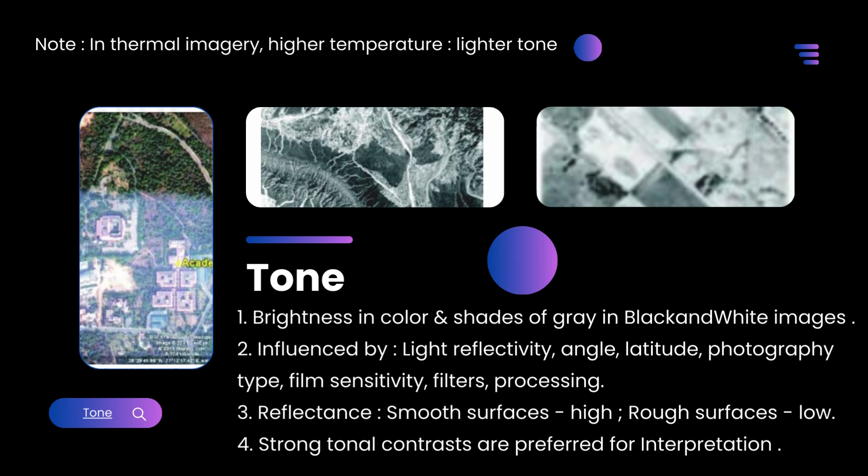Now let's explain one by one. Tone: brightness in color and shades of gray in black-and-white images is influenced by light reflectivity, angle, latitude, photography type, film sensitivity, filters, processing, and reflectance amount. Smooth surfaces have high reflectance; rough surfaces have low reflectance. Strong tonal contrasts are preferred for interpretation. Note: in thermal imagery, higher temperature implies higher tone.